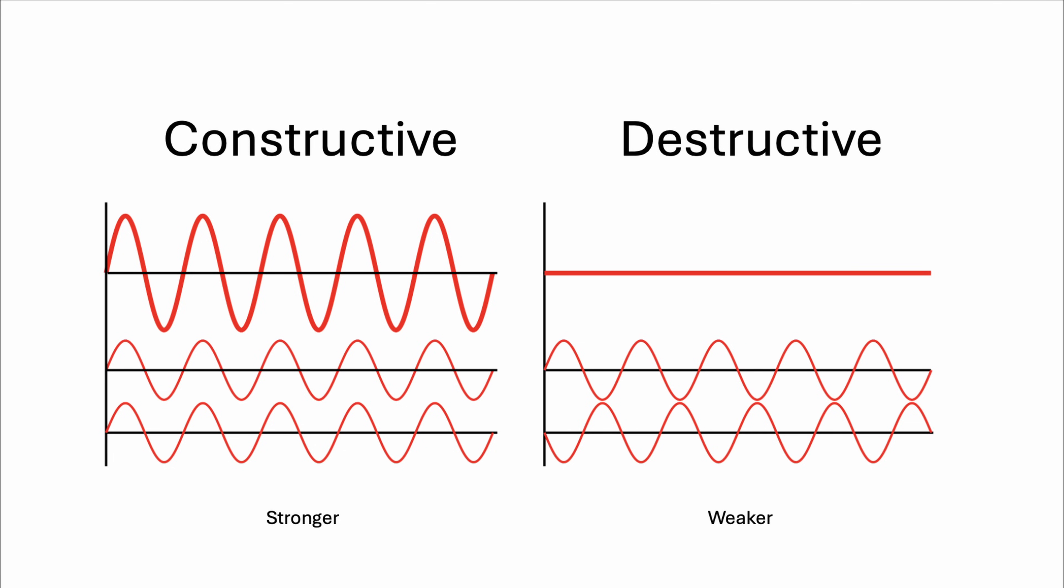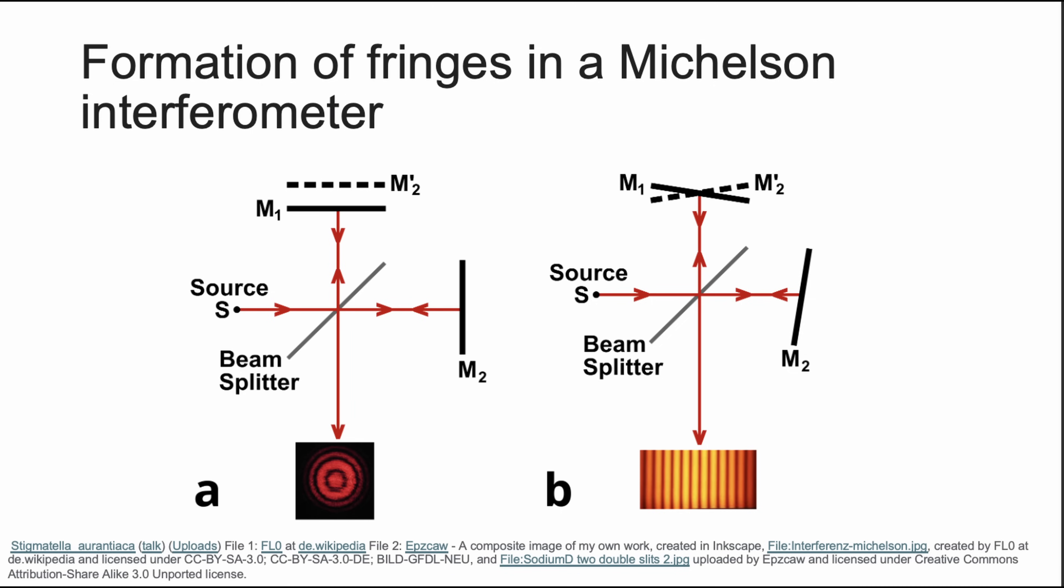Constructive interference occurs when waves meet in peak phases. The peaks align with each peak, amplifying the signal. In destructive interference, the waves meet out of phase. Peaks align with troughs, reducing or canceling the signal altogether. Because the mirror is moving constantly, shifting the distance traveled by one of the beams, the resulting interference continuously cycles between constructive and destructive patterns.